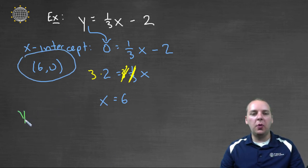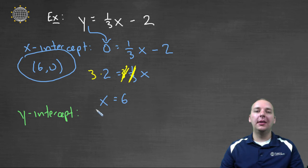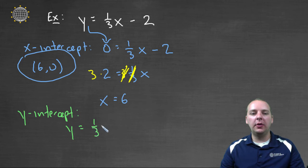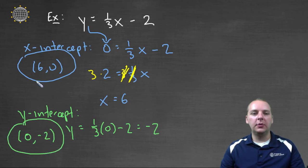Next let's do the y-intercept. For the y-intercept, we're going to let the x-coordinate be zero. So we'll have y equals one-third times zero minus two, which is obviously negative two. So the y-intercept is at zero comma negative two. Alright, so we have our x-intercept, we have our y-intercept.